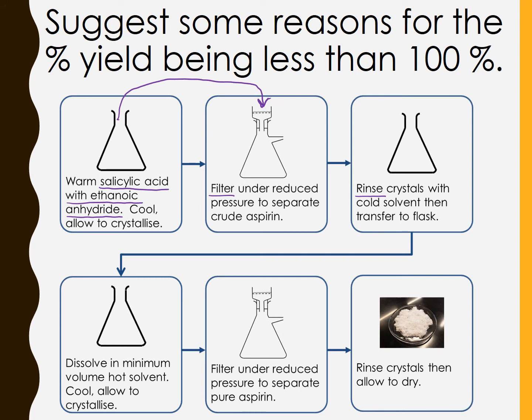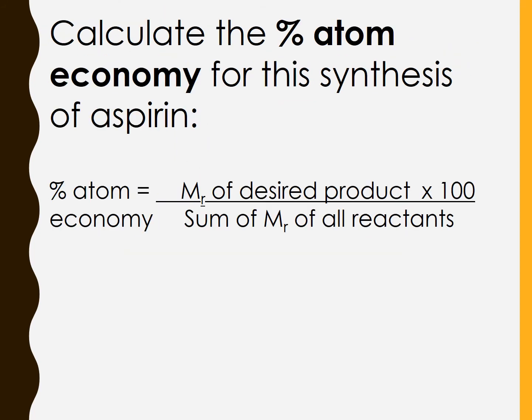Now that we're clearer about the percentage yield idea, the percentage yield tells us what proportion of the theoretical maximum mass has actually been achieved. Now let's consider a different feature of this reaction, the percentage atom economy for this synthesis of aspirin.